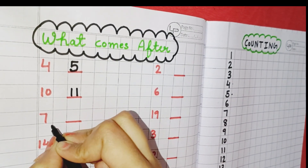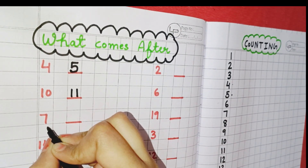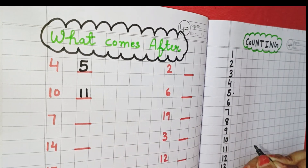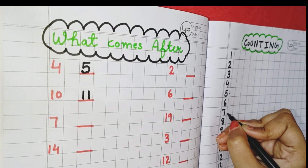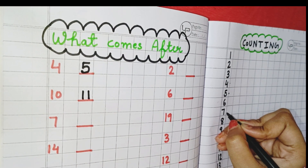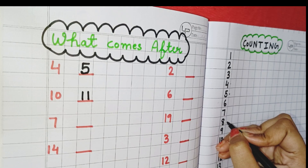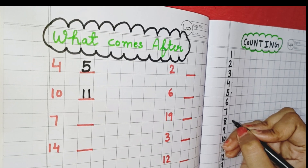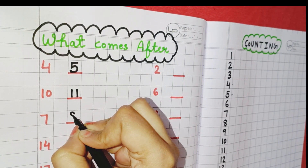Now, this third number here is 7. We have to find where is 7. You can see here is 7 and 8 is the number which comes next to 7.